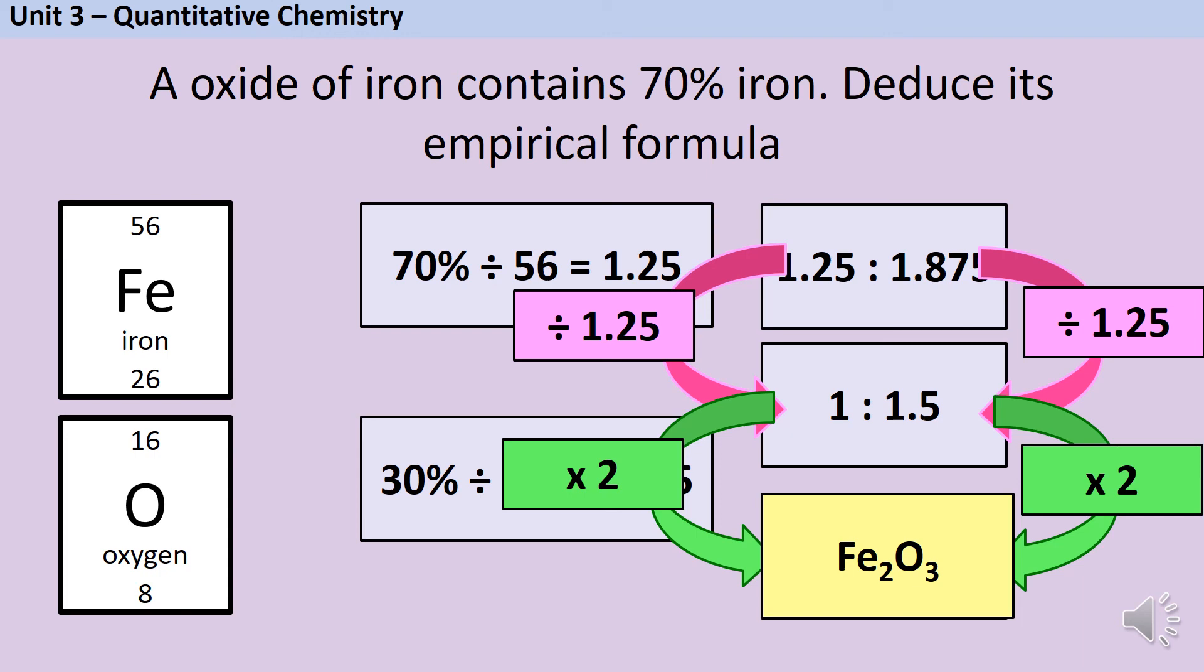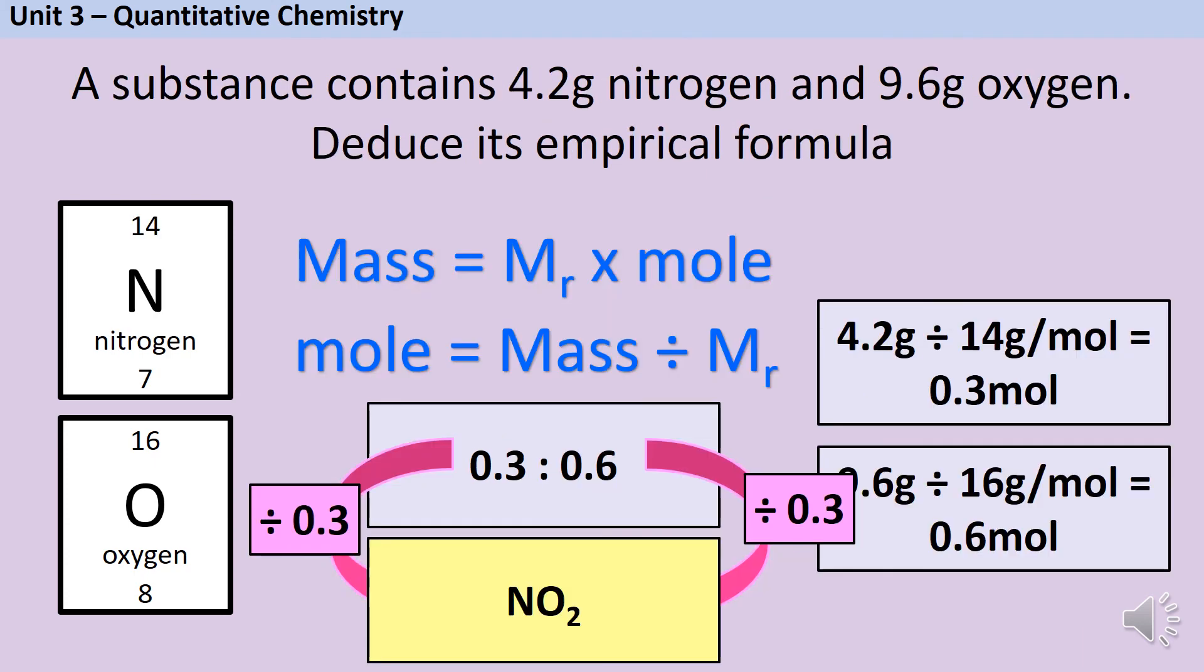Now we don't just need to know how to calculate empirical formula, we also need to know what we can do with it once we've got it. So let's look back at this very first example that we had with our nitrogen and oxygen and the empirical formula of NO2.